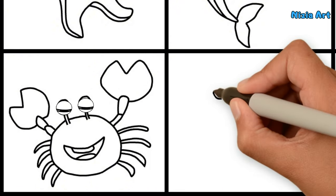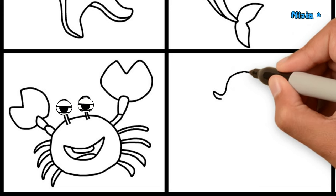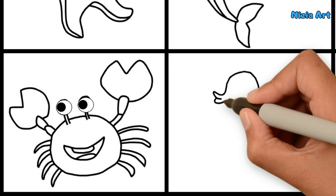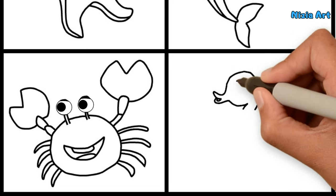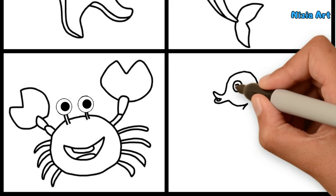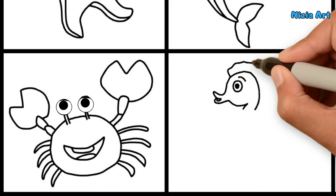Next, I'm drawing a seahorse. Seahorses have a unique shape, like a horse with a coiled tail. They move slowly on the seabed.